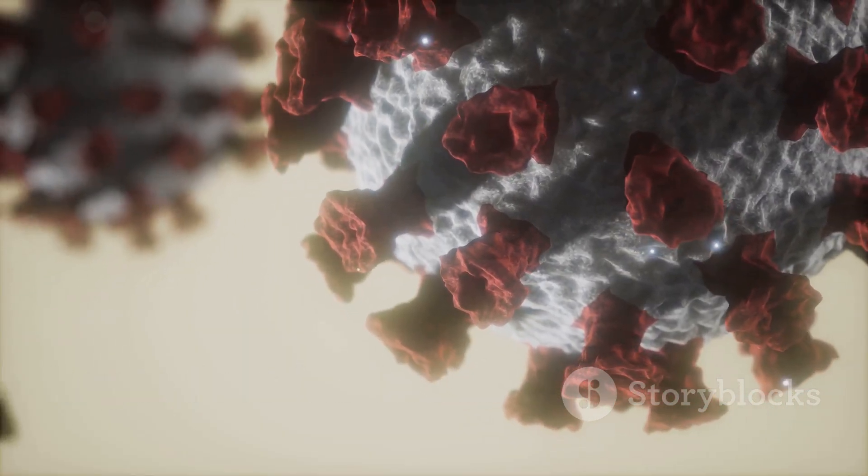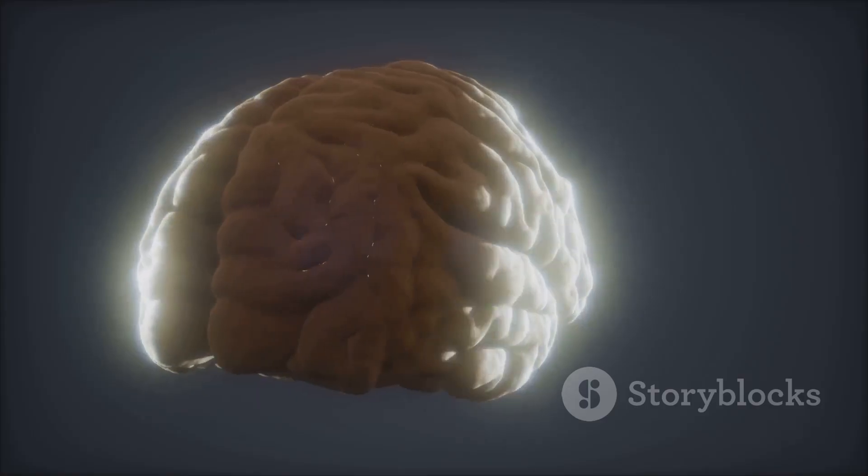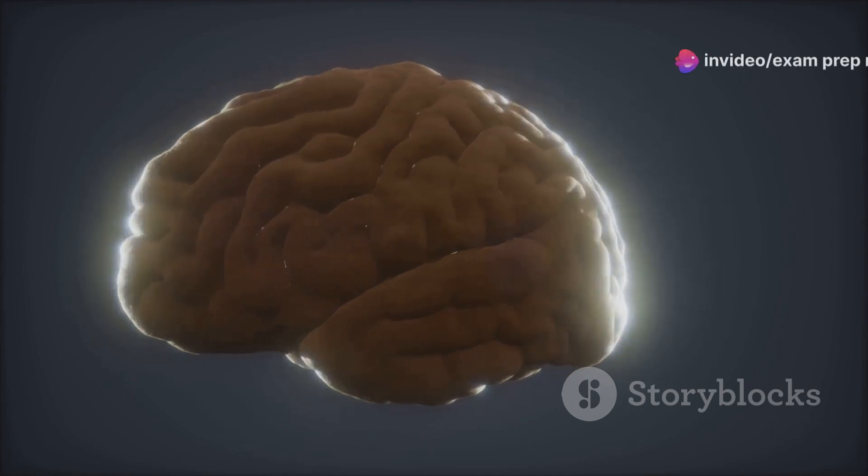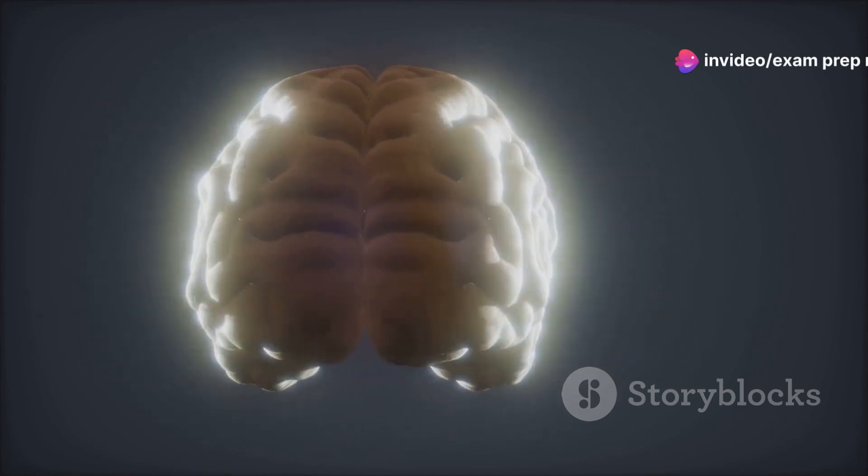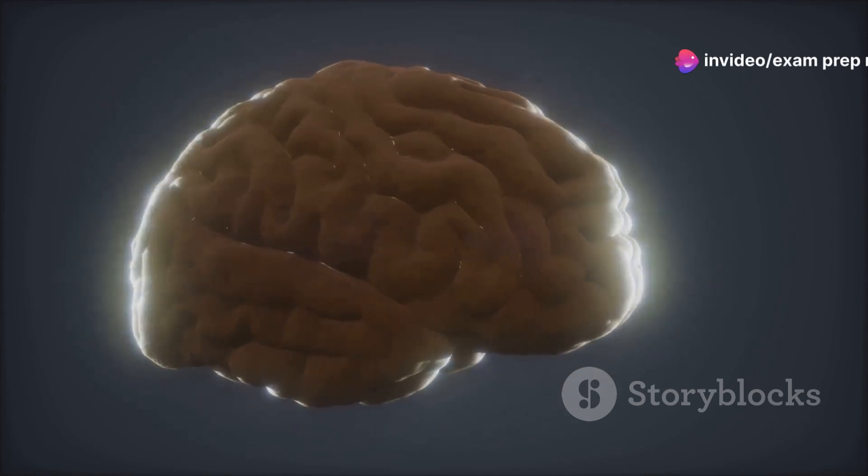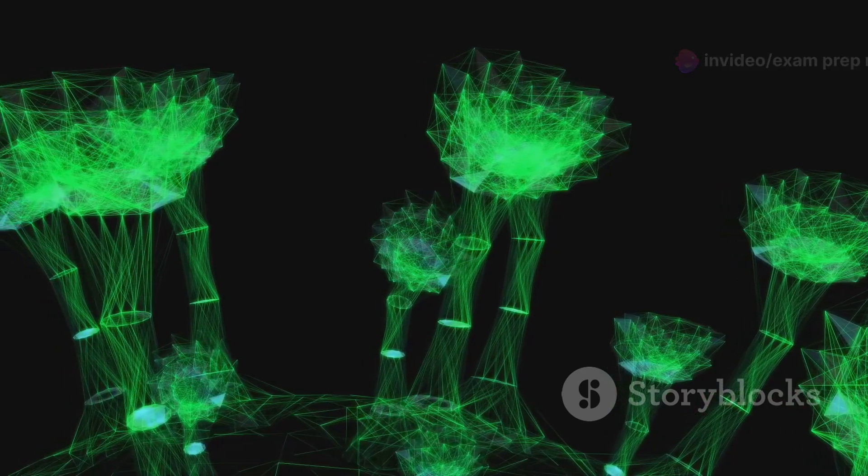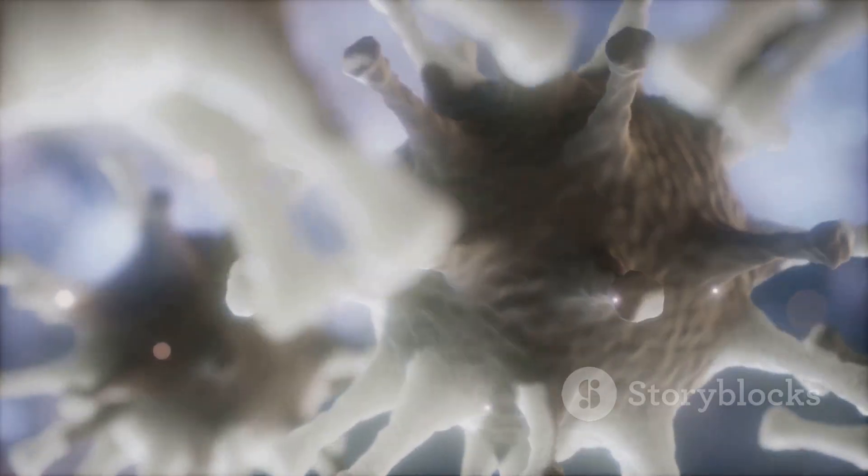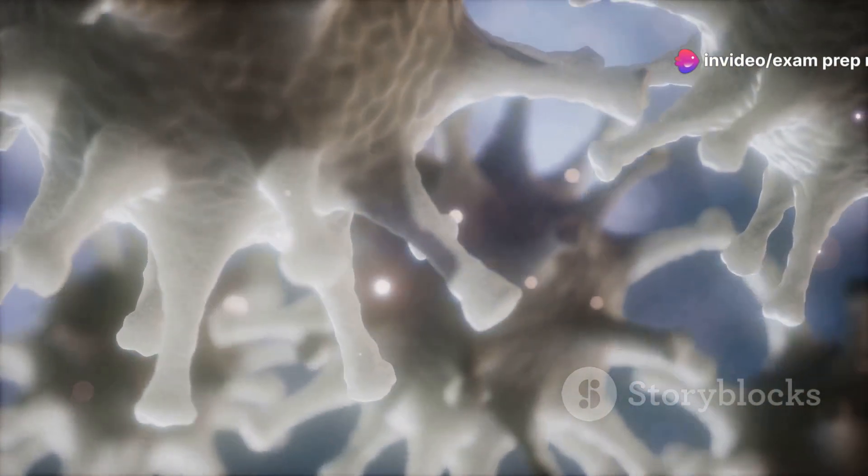Prions, the most enigmatic of the three infectious agents, are misfolded proteins that can trigger normal proteins in the brain to misfold as well. They are devoid of any genetic material, challenging the traditional understanding of infectious agents. These misfolded proteins clump together, forming aggregates that disrupt normal brain function, leading to neurodegenerative diseases.